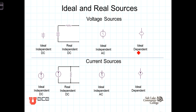First of all, ideal. An ideal voltage source is a voltage source that produces the same amount of voltage regardless of the load that's placed upon it. So, whether there's 1 amp of current or 100 amps of current coming from the source, an ideal source would have the same voltage.